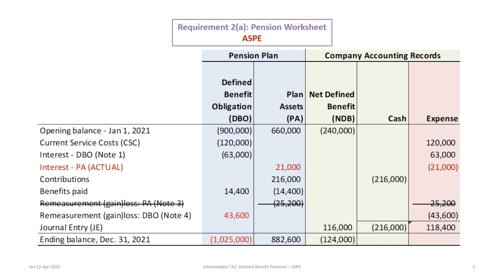You could have done something slightly different here. Instead of including the expected return for the plan assets, you could include only the actual return, and then not worry about any separate remeasurement gain or loss, because under ASPE the remeasurement gain or loss is not recognized separately as part of OCI. So we could just put the entire actual interest earned on the plan assets, which would eliminate the remeasurement gain or loss line on plan assets — but we would still have the remeasurement gain or loss on the defined benefit obligation.